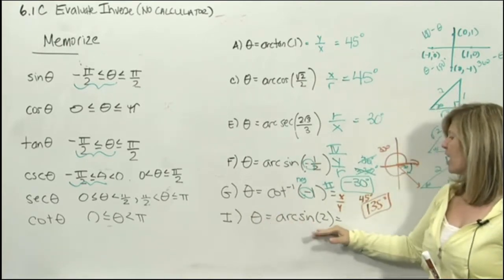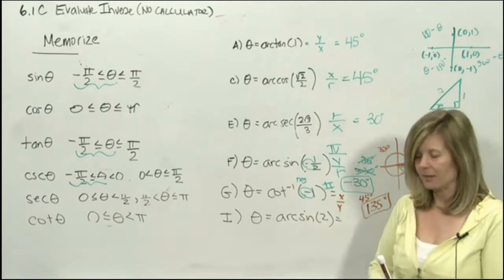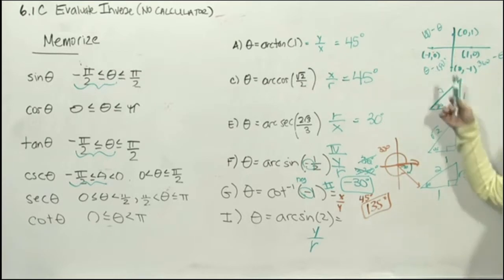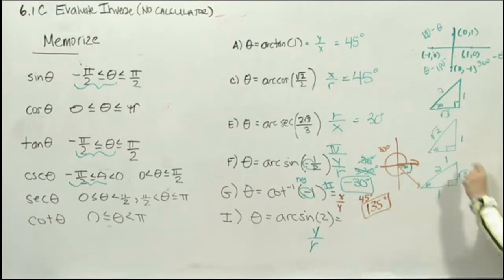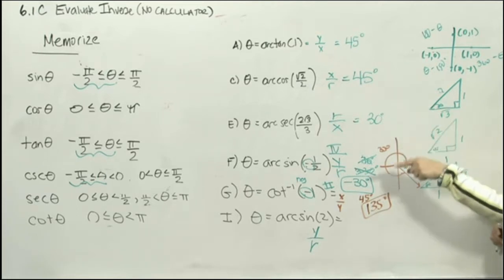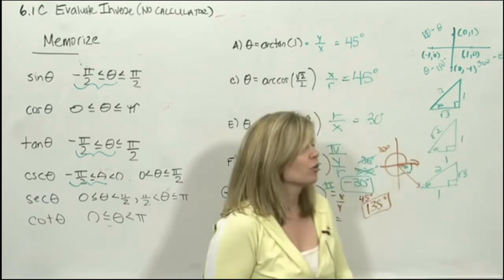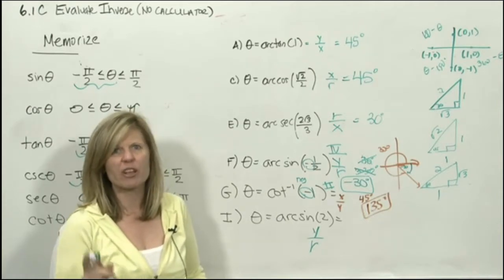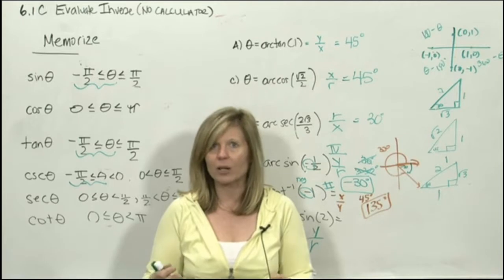The last one: arcsin(2). Breathe easy — the number is positive, so the angle should be in quadrant 1. Sine is y over r. Going through the references: 30 gives 1/2, 45 gives √2/2, 60 gives √3/2 — none of them give 2. You might think you need a calculator, but stop and think: we're going backwards.